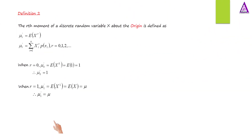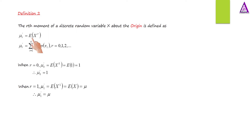Definition two: The r-th moment of a discrete random variable x about the origin is defined as mu subscript r prime, equal to the expected value of x raised to power r. It equals the summation for i ranging from 1 to n of x subscript i raised to power r times p(x subscript i), where r equals 0, 1, 2, and so on.